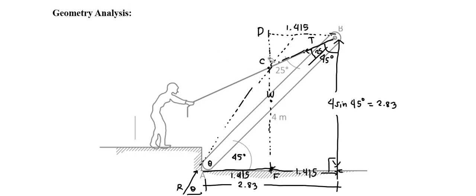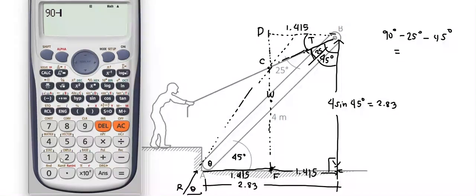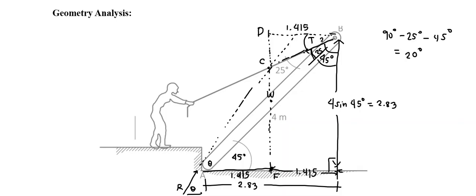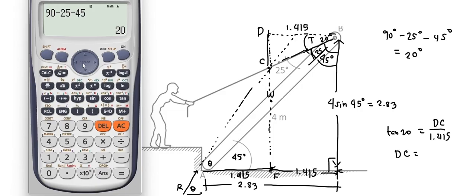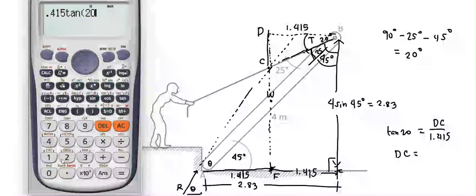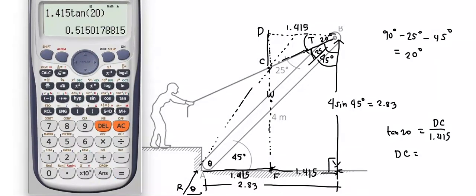Therefore, this angle here is 45, and this angle here is 25 degrees. Therefore, this missing angle here must be equal to 90 degrees minus 25 minus 45 degrees, which is equal to 20 degrees. And we can solve for this length by using the tangent function. Tangent 20 degrees is equal to opposite DC over adjacent 1.415. Therefore, DC is equal to 0.515.